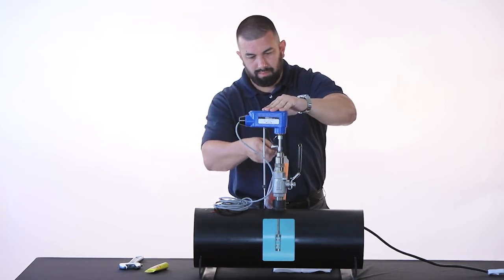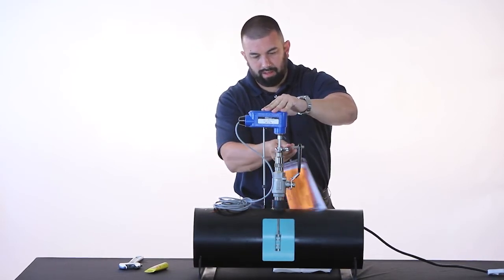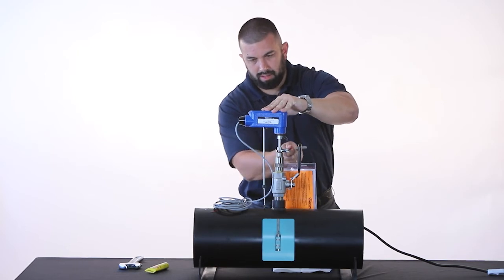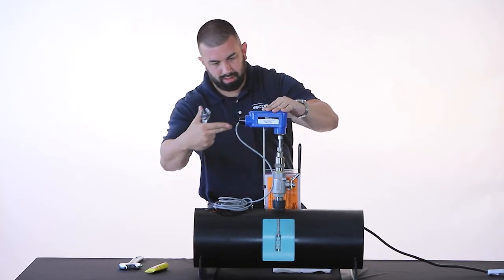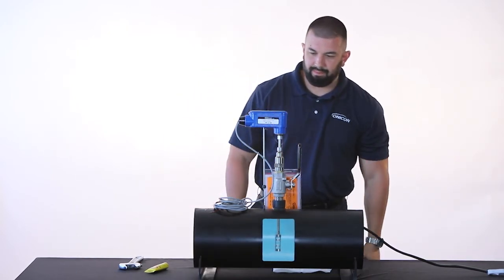Align the flow meter to the flow direction in the pipe using the flow direction arrow on the side of the electronics enclosure. Then use the wrench to tighten the clamping nut securing the meter in place. Your meter is now properly installed.